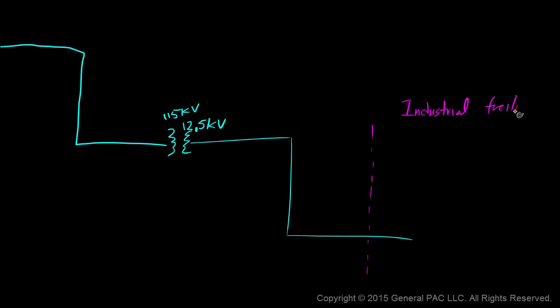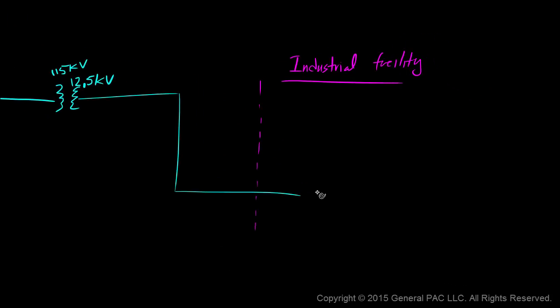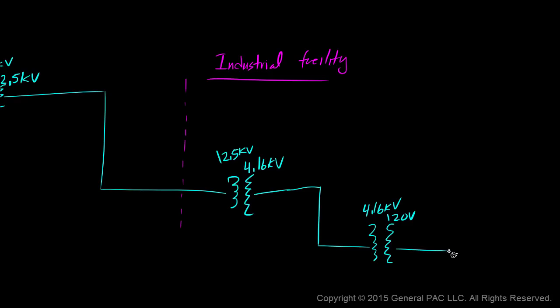Suppose that we worked at an industrial facility. Inside this industrial facility we have a step-down transformer that transforms the voltage from 12.5 kV to 4.16 kV, and then we have another transformer that steps down the voltage again from 4.16 kV to 120 volts. And that 120 volts is serving an outlet somewhere.